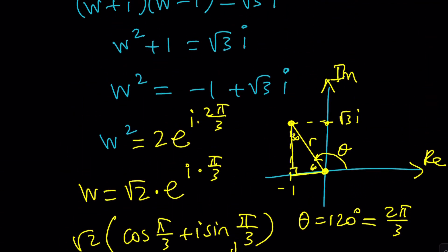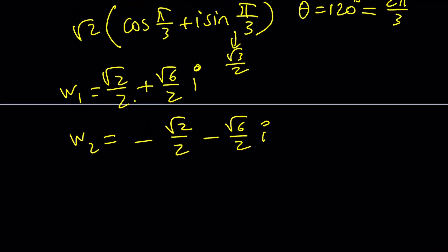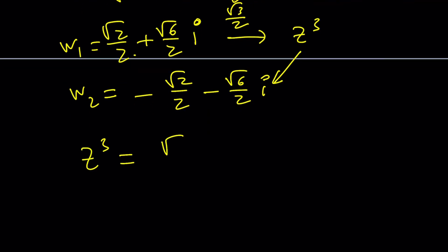w is z cubed. So now you can go ahead and take, set these equal to z cubed, both of these, and try to find for z from there. Let's go ahead and do it. z cubed equals root 2 over 2 plus root 6 over 2i. Here's the problem.